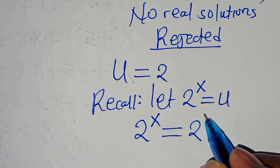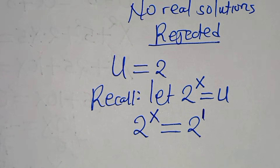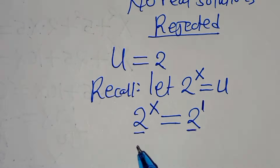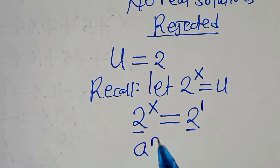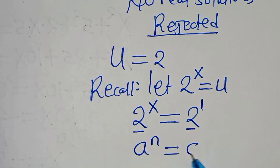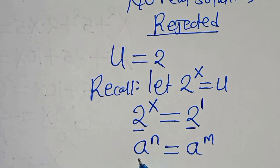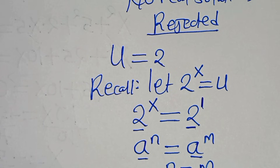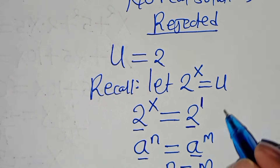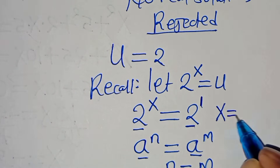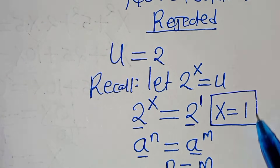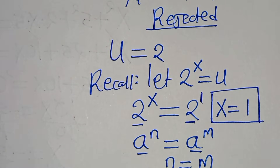We have that 2 is raised to the power of 1, so the bases are common. Using the property that if a to the power of n equals a to the power of m then n equals m, this means that x is equal to 1.